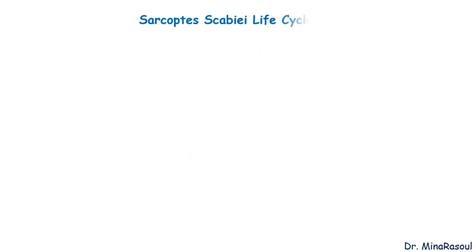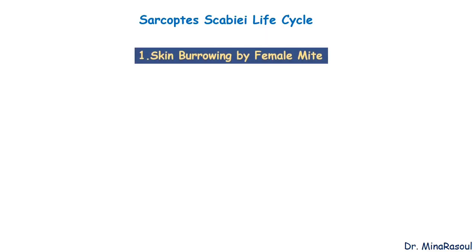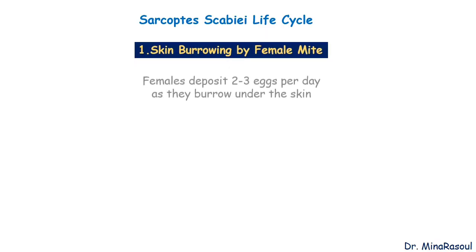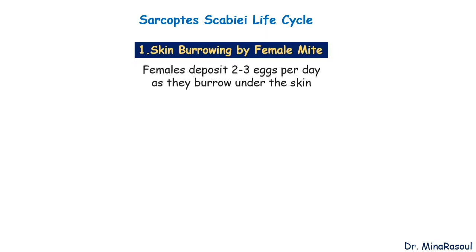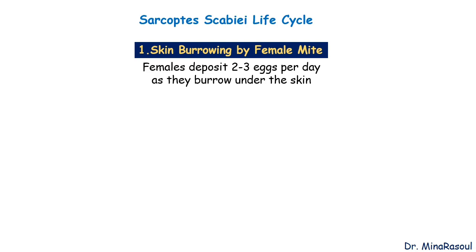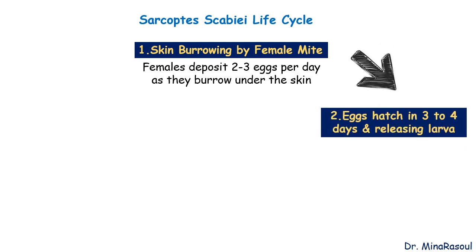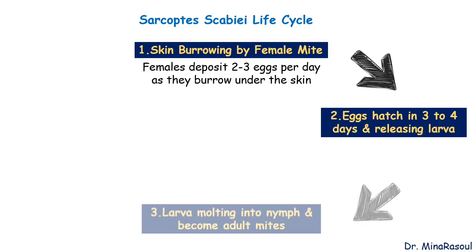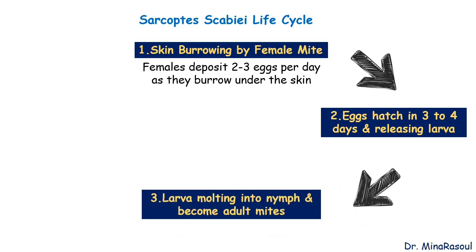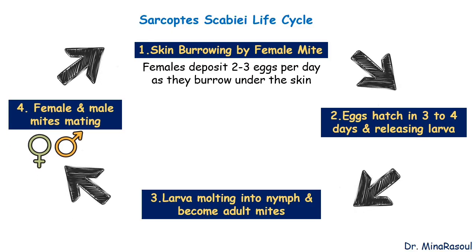Regarding the Sarcoptes scabiei life cycle: stage number 1 is skin burrowing by the female mite, where females deposit 2-3 eggs per day as they burrow under the skin. Stage number 2: eggs hatch in 3-4 days, releasing larvae. Stage number 3: larvae molt into nymphs and become adult mites. Stage number 4: female and male mites mating.